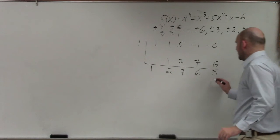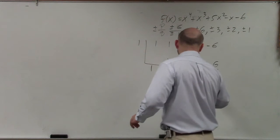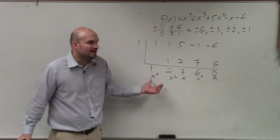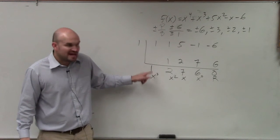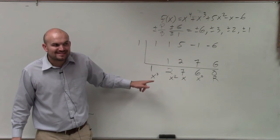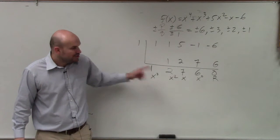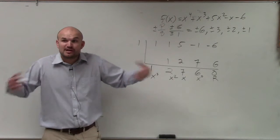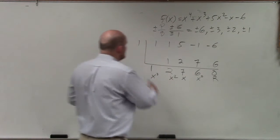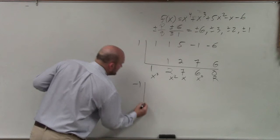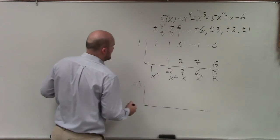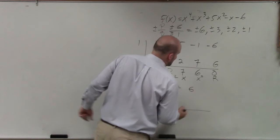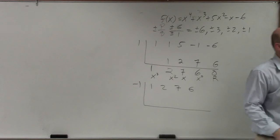Wait — this is a cubic polynomial, right? It's x cubed. You're not going to be able to factor this just by looking at it, so I need to further refine it. Let's try negative 1 and see if it's also a factor. I'll bring down the answers: 2, 7, 6, and the remainder is 0.